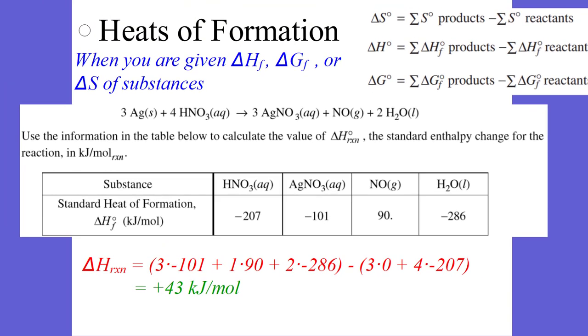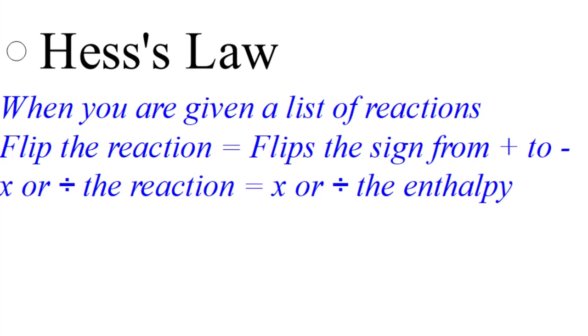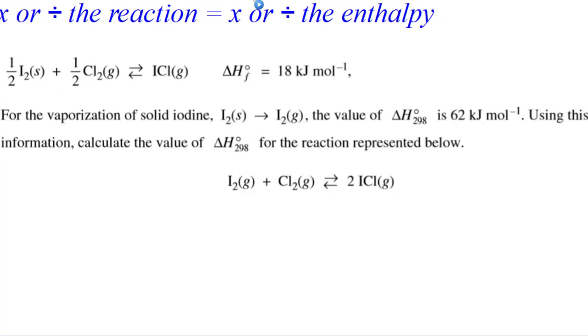Let's go to the third one, which is Hess's law. When do we use Hess's law? We use Hess's law when we're given a list of reactions. And we can do two things. We can flip the reaction, which flips the enthalpy sign from positive to negative. Or you can multiply or divide the reaction, which multiplies or divides the enthalpy of the reaction as well.